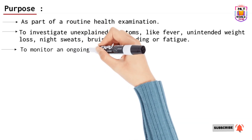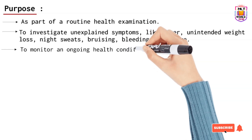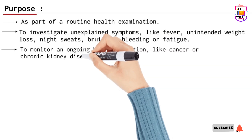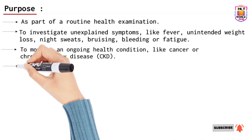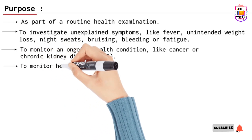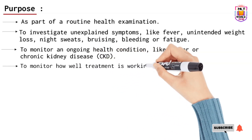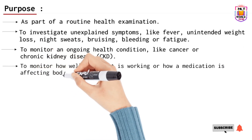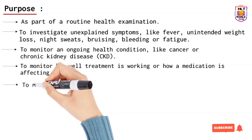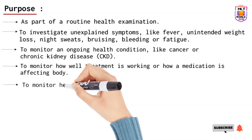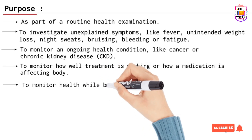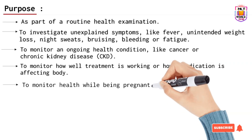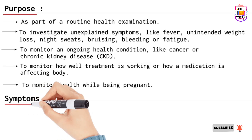Another purpose is to monitor any ongoing treatment or health conditions like cancer or chronic kidney disease (CKD), and to check how well treatment is going. For example, if the first CBC showed a WBC count as high as 20,000–25,000, the doctor will recommend repeating the CBC to check if the white blood cell count has normalized. The test is also done to monitor health during pregnancy, especially to investigate low hemoglobin.